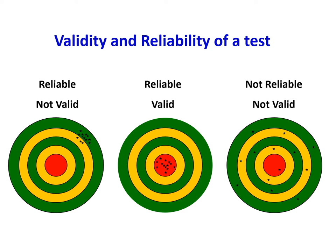Combining validity and reliability: the first dartboard shows darts clustered together but away from the center — reliable but not valid. The second shows darts clustered at the center — both reliable and valid. The third shows darts scattered everywhere — neither reliable nor valid. I hope this gives a clear explanation of how good a test is and how we determine that. Thank you for staying with me — I hope you all stay well. We'll talk again. Bye.